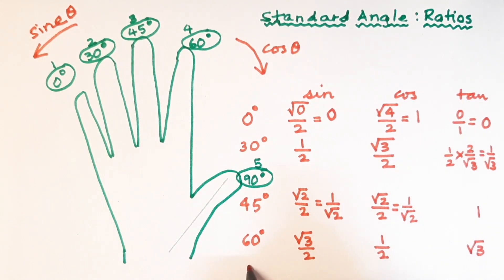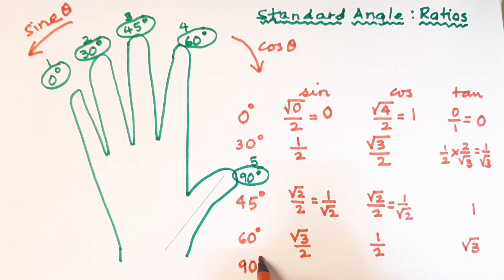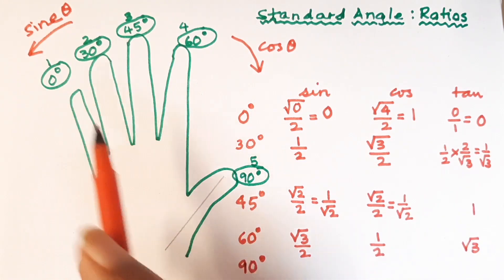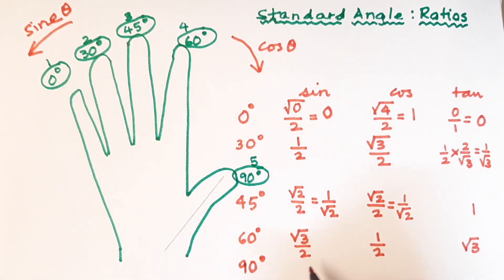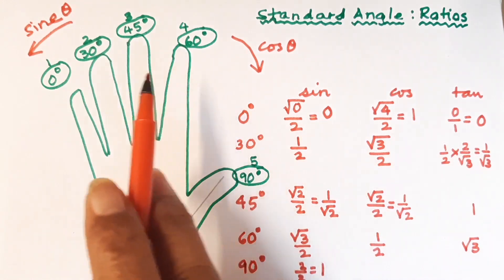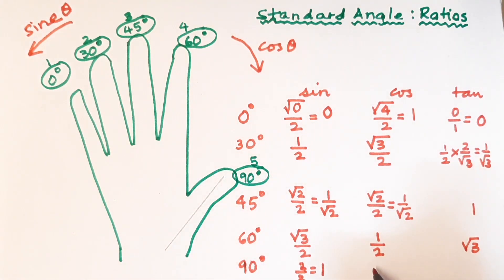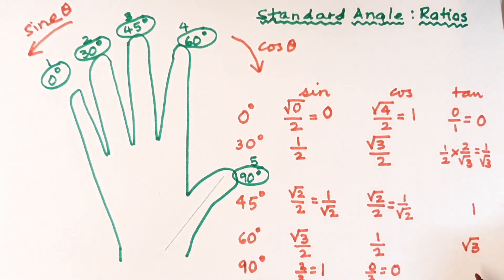The last one is 90 degrees. For sine of 90°, we look at the fingers on the left — four fingers, so root of four is two, divided by two gives one. For cos of 90°, there are zero fingers on the right, so zero divided by two gives zero. For tan of 90°, sine upon cos is one upon zero, which is infinity.